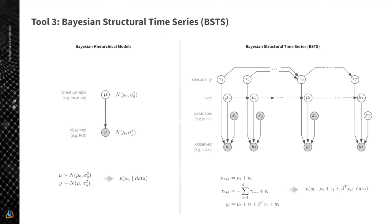When applying this approach to time series analysis, the concept stays the same but the model is more sophisticated. We have our sales data and observed covariates like prices, but we also assume there are hidden latent processes that evolve according to their own trajectories — things like seasonality, cycles in the data, or trends. We do not know if these cycles or trends are present — we need to estimate parameters that tell us if they are present or if those parameters are zero.